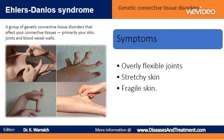Fragile skin: damaged skin often doesn't heal well. For example, the stitches used to close a wound often will tear out and leave a gaping scar. These scars may look thin and crinkly. Symptom severity can vary from person to person. Some people with Ehlers-Danlos syndrome will have overly flexible joints but few or none of the skin symptoms.